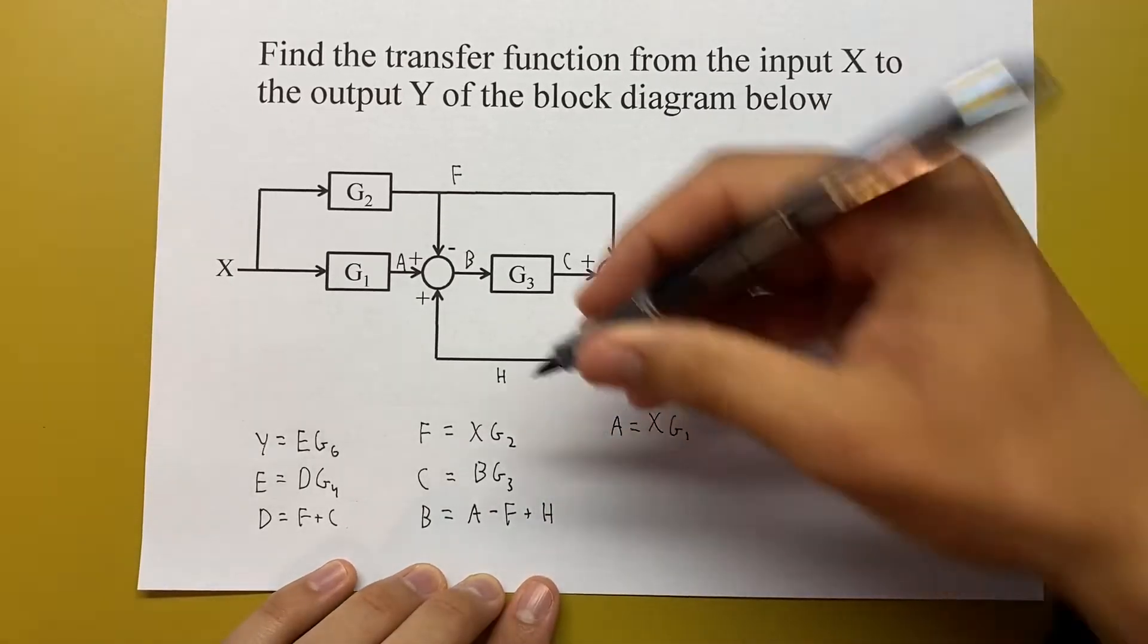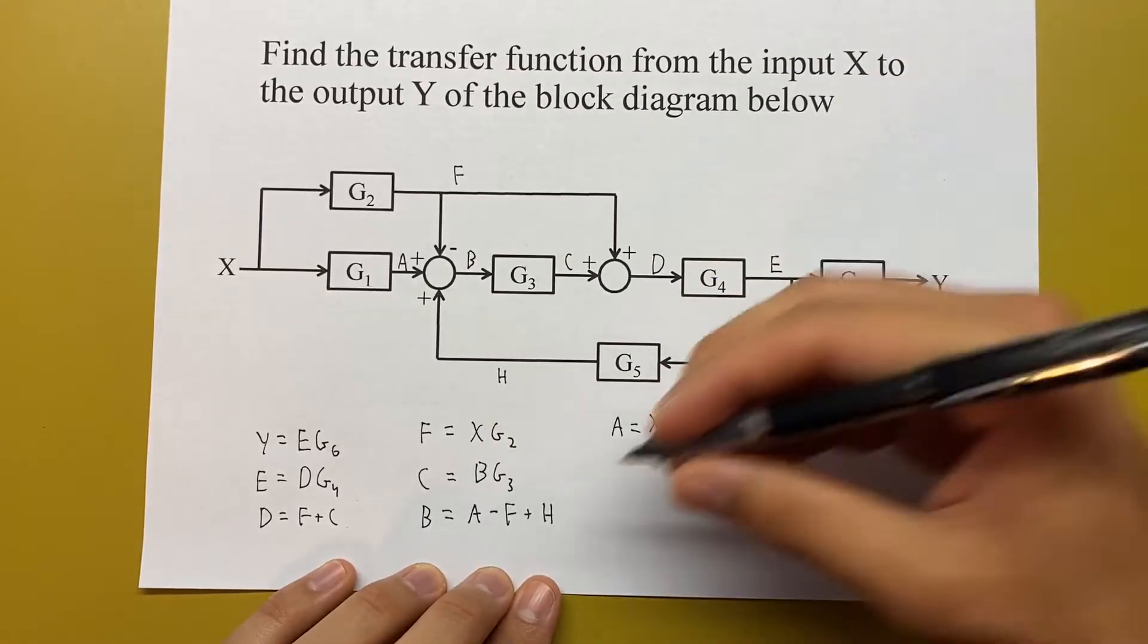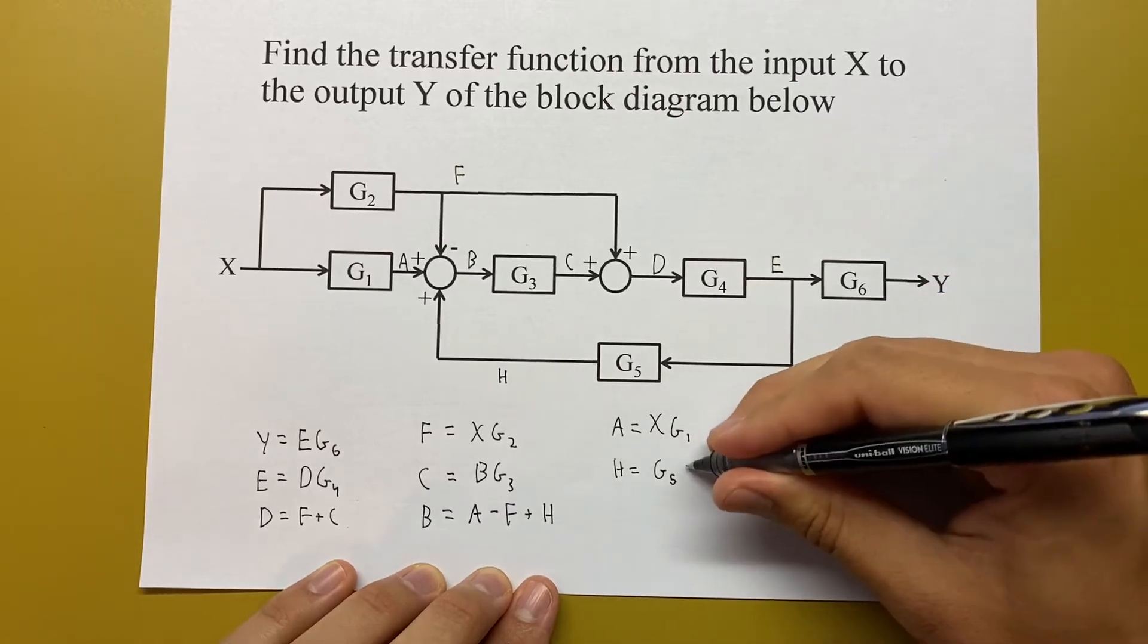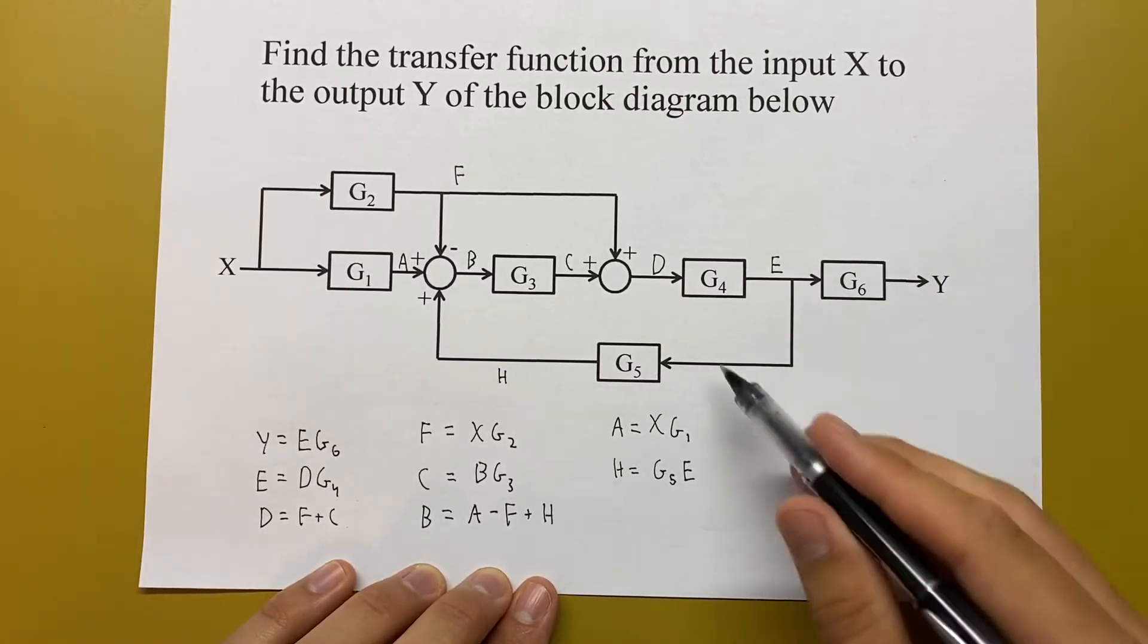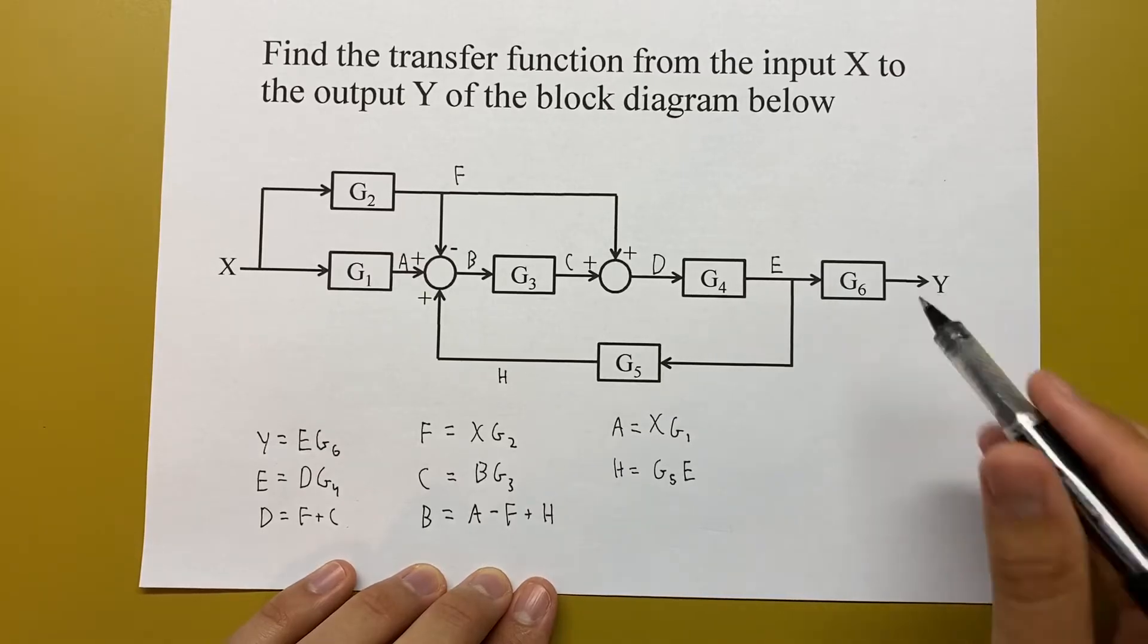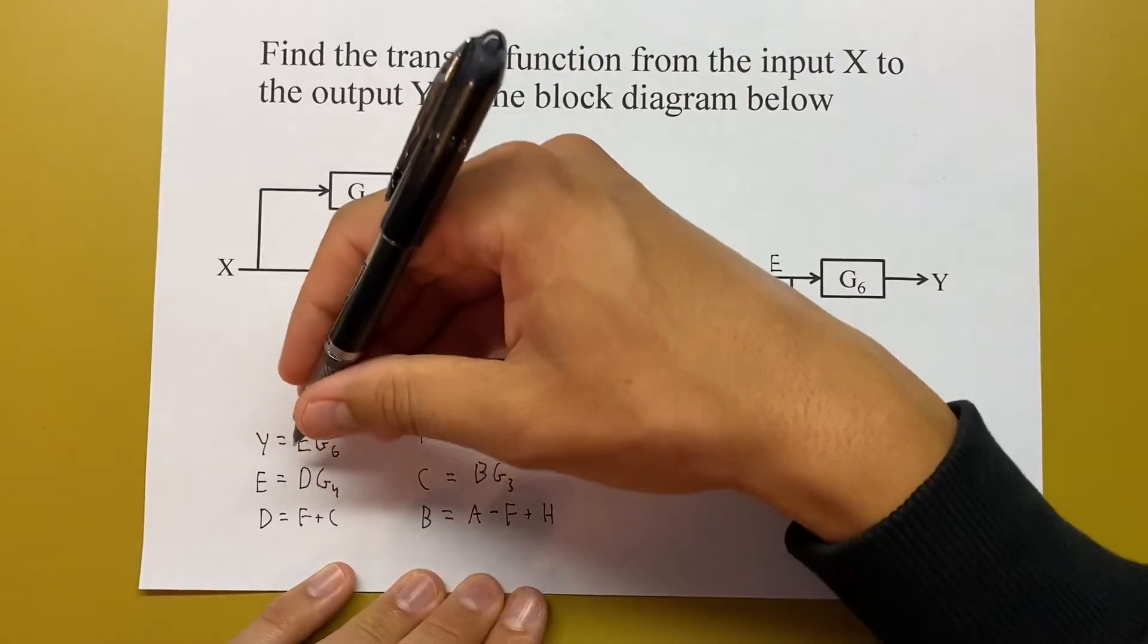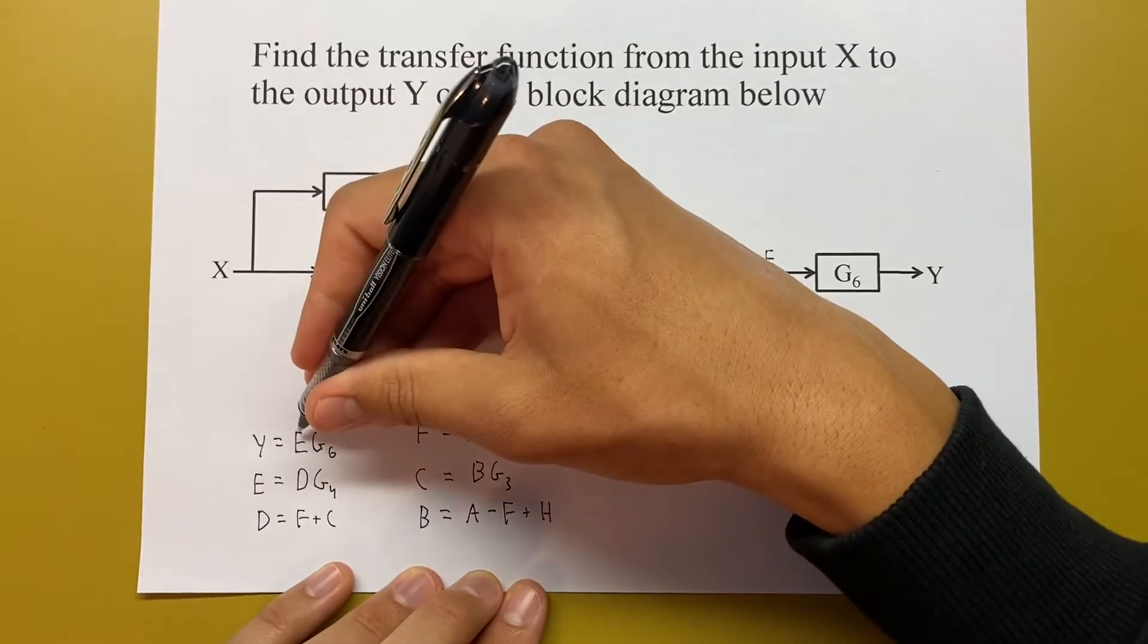So H, to start, is going to be G5 times the signal E. We're still working in this direction, trying to go back to Y. We know that E from this equation, we can rearrange it to be E is equal to Y over G6.